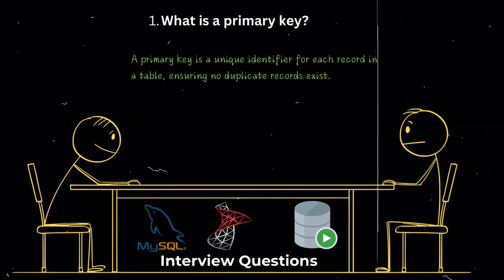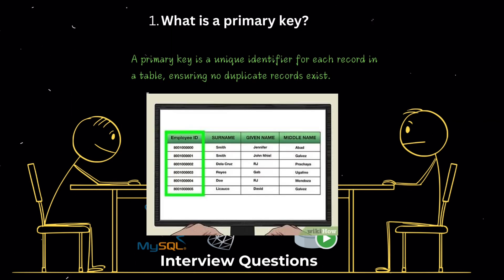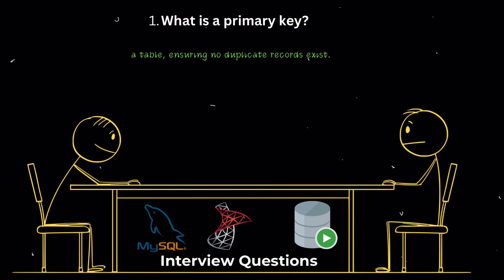What is a primary key? A primary key is a unique identifier for each record in a table. It ensures that no duplicate records exist and each record can be uniquely identified. There can be only one primary key in a table, and it is chosen from the candidate keys.